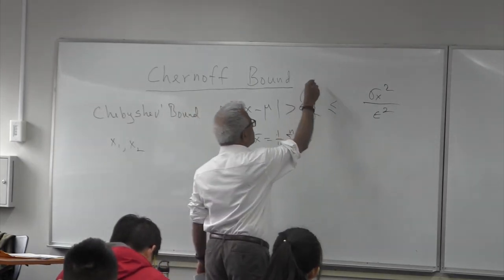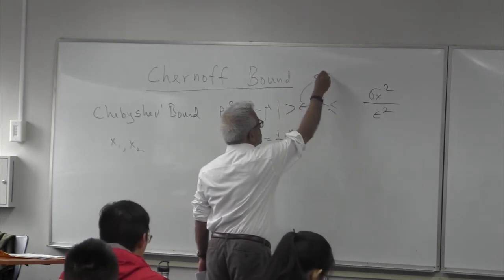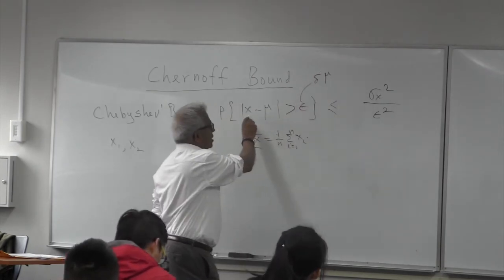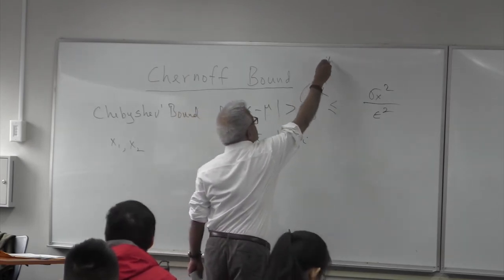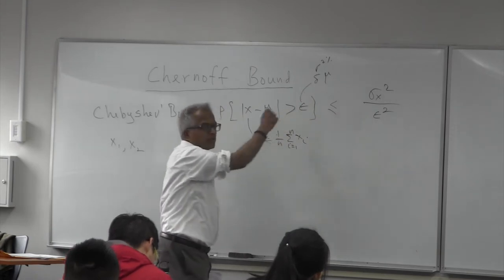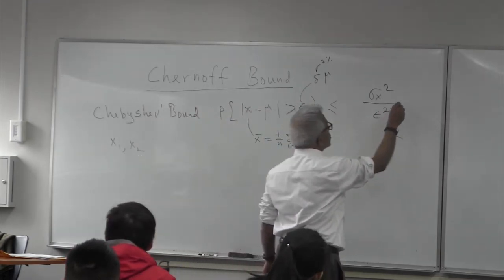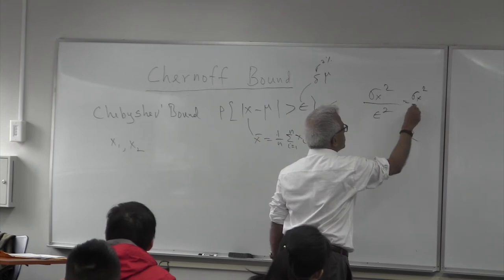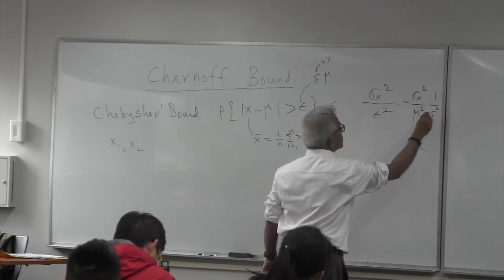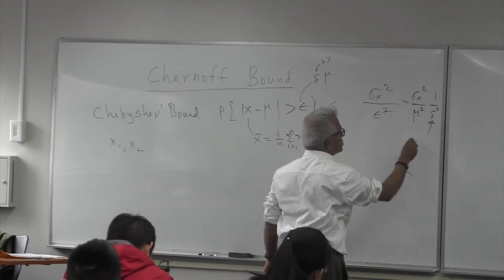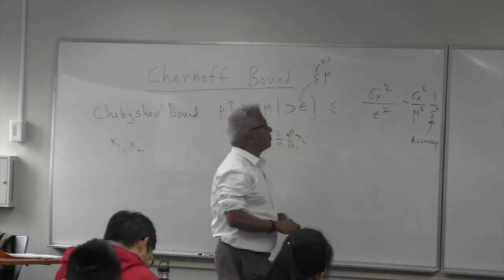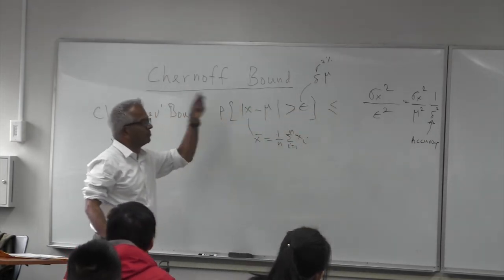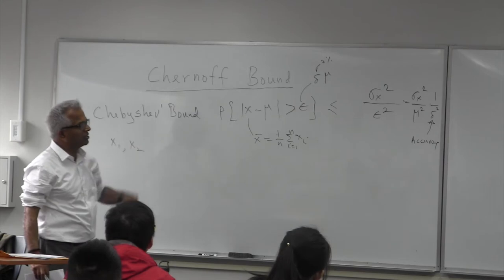For example, if you put the deviation to be delta times epsilon — meaning the random variable deviates from its mean by less than 2% of the mean value — then this comes out to be sigma x squared over mu squared, times 1 over delta squared. The penalty you pay for accuracy is in terms of its square, even in Chebyshev. Now let's see what the Chernoff bound is.